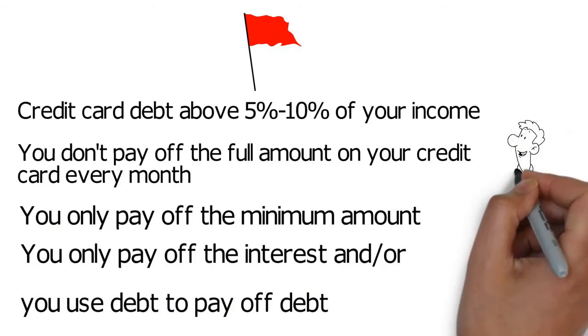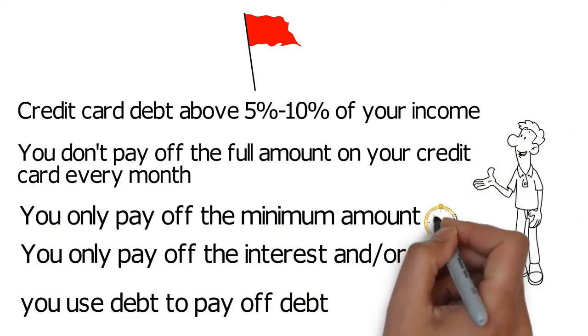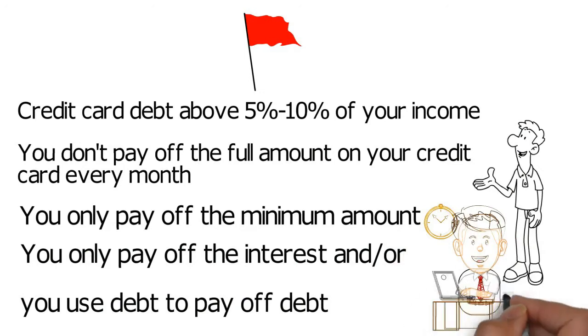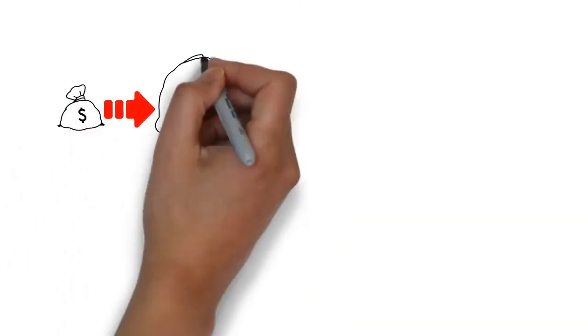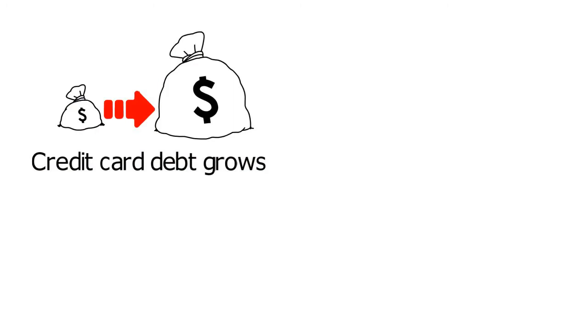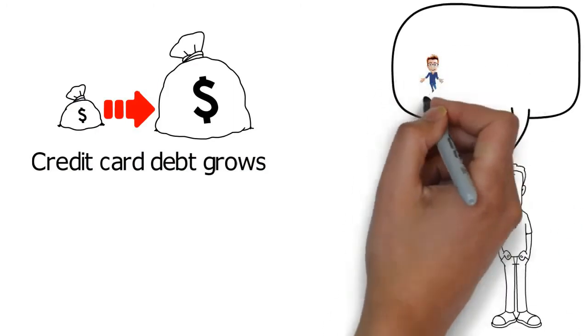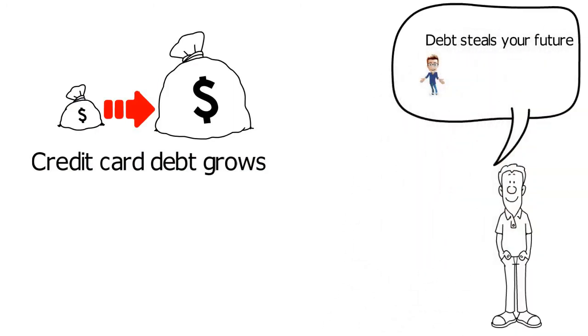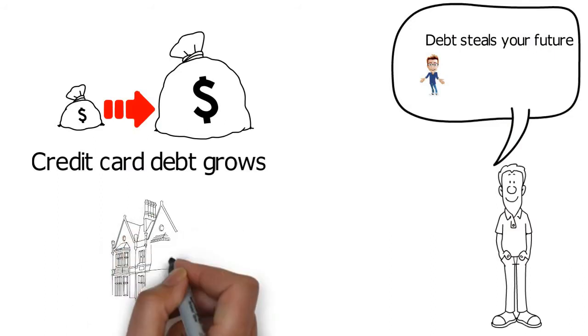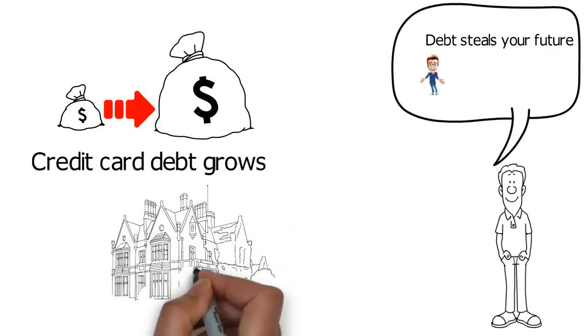If Sam met many of these criteria, Dave was going to suggest that he get professional support. Sam said he didn't always pay off his credit card debts but didn't meet any of the other criteria. He remembered that Dave had said debts steal your future and mimicked Dave saying it. Dave further explained that it's more than financial—it prevents you living life and taking the risks needed to reach your aspirations.